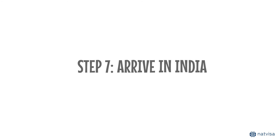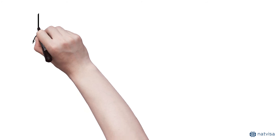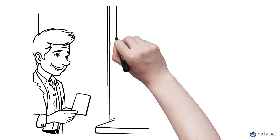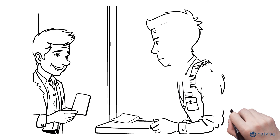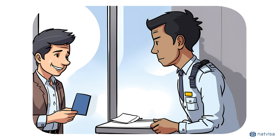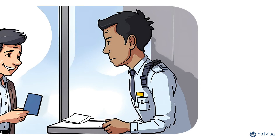Step 7: Arrive in India. After arrival in India, show your passport and ETA to the immigration officer. They will stamp your passport with the entry date and the length of your permitted stay. Have a wonderful time during your visit.